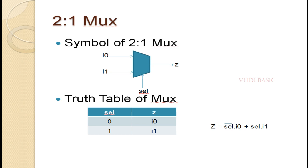This is the expression of a 2:1 MUX: z equals (not select AND i0) OR (select AND i1).